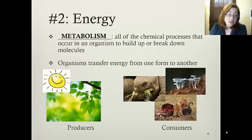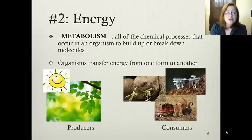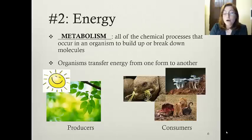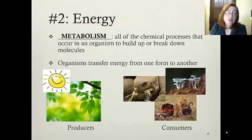Some groups of organisms are called producers — they take in energy from the sun and convert it into a form of food energy, such as glucose. But if you are a consumer, you can't take in energy from the sun, so you have to consume it. Consumers need to eat something, whether it is a plant or another producer, or as shown in the picture with the lions, they eat other animals as well. We will talk more about the food chain when we get into ecology later.